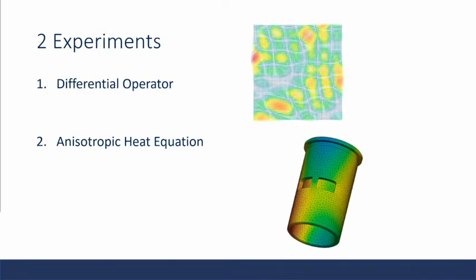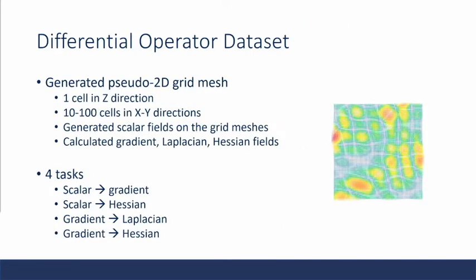We have two experiments to dive into. The first one is modeling differential operators, and the second one is simulating anisotropic heat equations. They generated a pseudo-2D grid mesh of one cell in the z direction and 10 to 100 cells in xy directions. They generated the scalar fields on the grid meshes based on the cells. And then they've calculated the gradient, the Laplacian, and the Hessian fields. And so the four tasks that they wanted the model to learn is converting from scalar fields to gradient or Hessian, and going from the gradient field to the Laplacian or the Hessian.